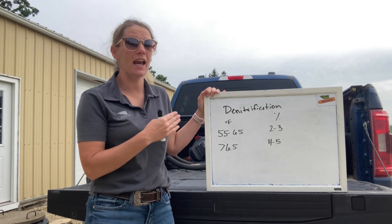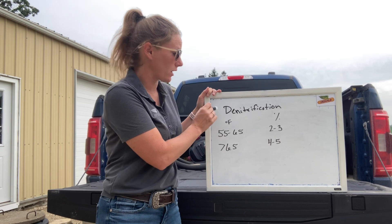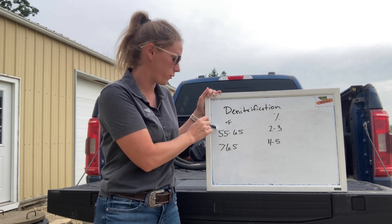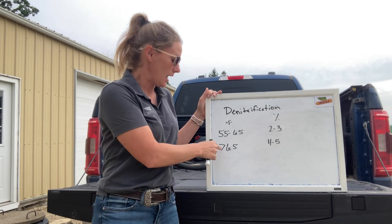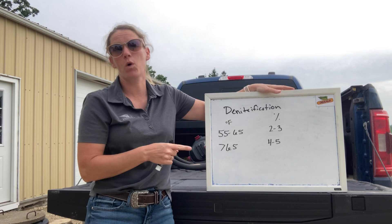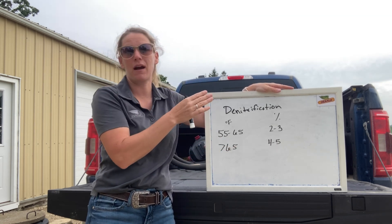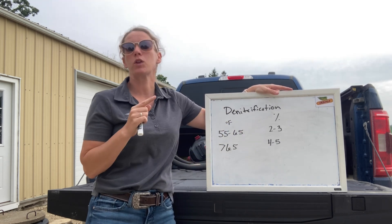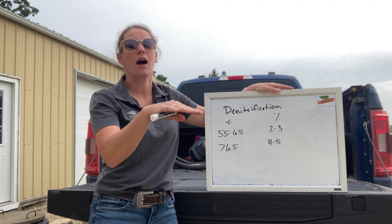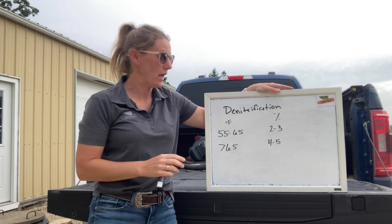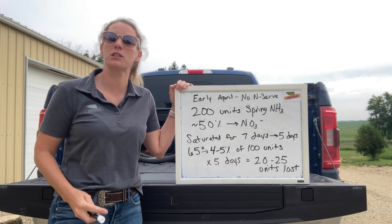When it comes to denitrification, that is a biological process, so the warmer we are the faster it's going to happen. Looking at the denitrification rate based on temperature: at 55 to 65 degrees, we're going to lose about two to three percent of that nitrogen per day while saturated. If we are warmer than 65 degrees, that increases to about four to five percent loss per day. The caveat is that it's four to five percent loss per day at greater than 65°F in an anaerobic situation — and remember it takes about a day and a half to two days of being saturated to get all the oxygen out of the soil and create that anaerobic condition where this process starts to happen.